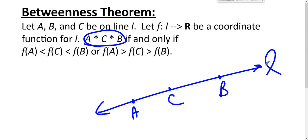Well if the coordinates go up then C is between A and B. If the coordinates go down then C is between A and B, but it has to be one or the other.